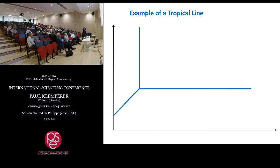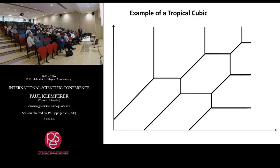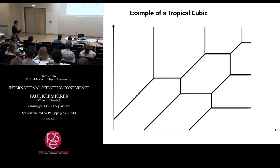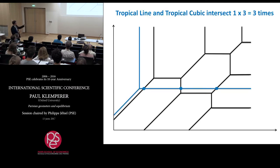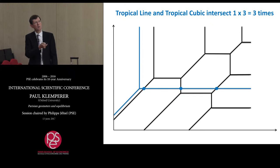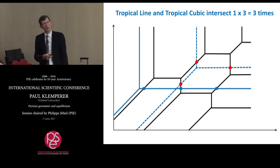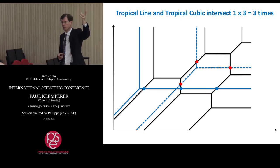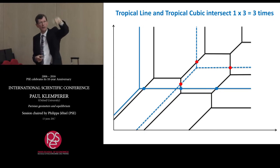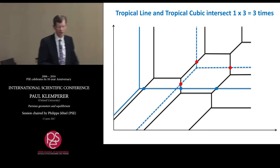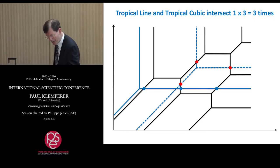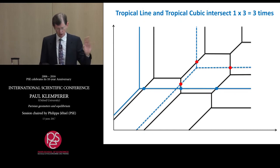Here's a tropical line and a tropical cubic. If I superimpose them, they must intersect exactly three times — one, two, three. If I move my line around, they still intersect three times, because one times three equals three. This time they intersect on three different arms of the line, but however you move it, it will always intersect exactly three times. That is Bezout's theorem working better in this geometry.